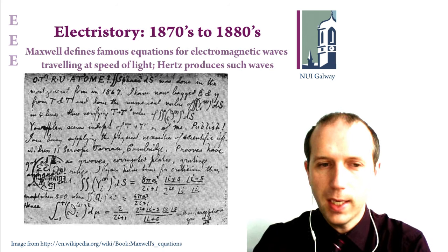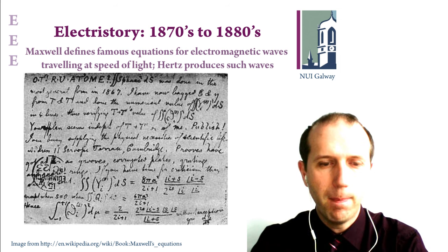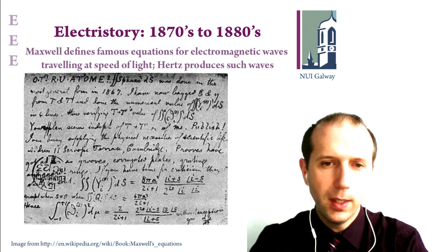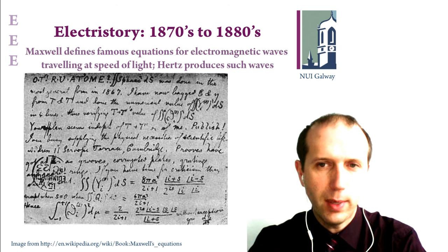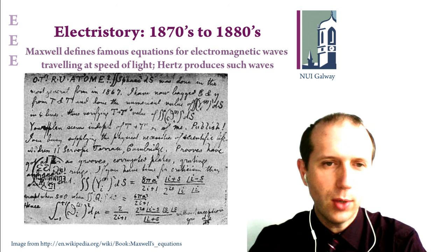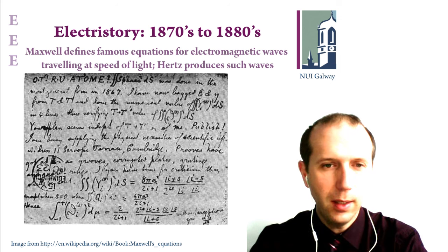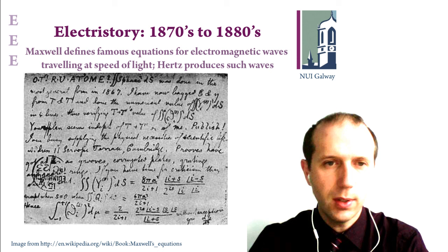Going on from that, Maxwell came up with famous laws governing electricity and magnetism, and also deduced that electromagnetic waves travel at the speed of light. It was later realized by Heinrich Hertz, a German physicist, who actually went and produced such electromagnetic waves.